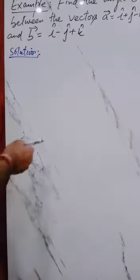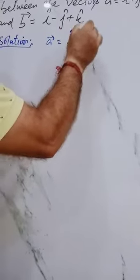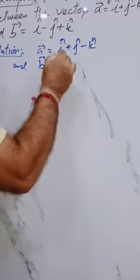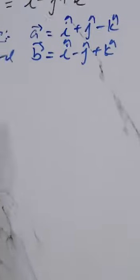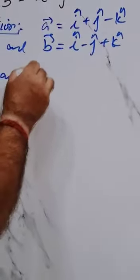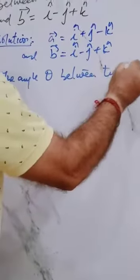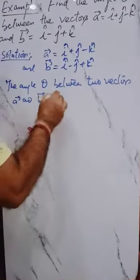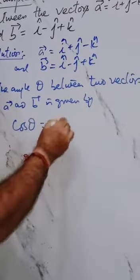Let us start the solution. We have two vectors a and b. Vector a is i plus j minus k, and vector b is i minus j plus k. The formula for the angle theta between two vectors a and b is given by cos theta equals a dot b upon the magnitude of a into magnitude of b.